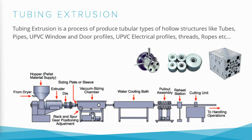Now we have tubing extrusion. Tube extrusion is a process of producing tubular continuous shapes like pipes, tubes, ropes, electrical profiles, and UPVC profiles. The line arrangement for this tubing extrusion remains the same for tubes, pipes, threads, and profiles. The only thing that changes in this process is the die, because the die is responsible for giving different shapes. If we want a hollow part, we change the die; if we want solid sections like threads or cables, we change the die accordingly.